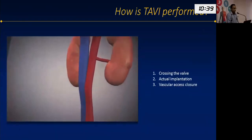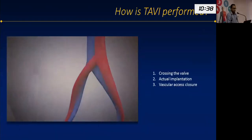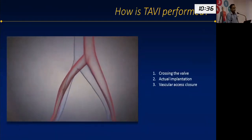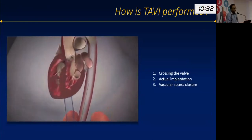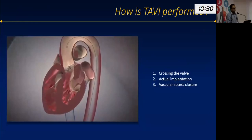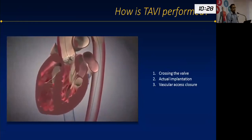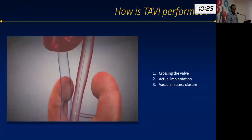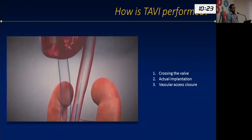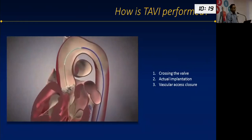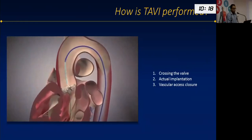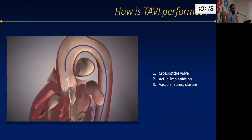There are three key pressure points in performing a TAVI procedure. First, crossing the valve can be quite challenging because these valves are heavily calcified and stenosed. Second is the actual placement of the valve — if not placed correctly across the annulus, results will be poor. The third challenge is closing the vascular access.